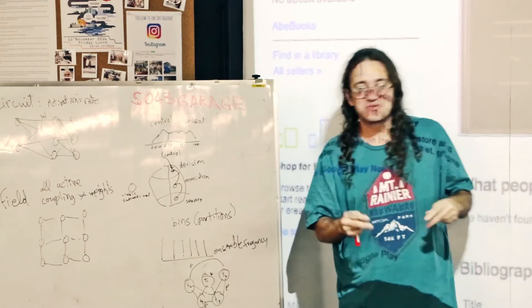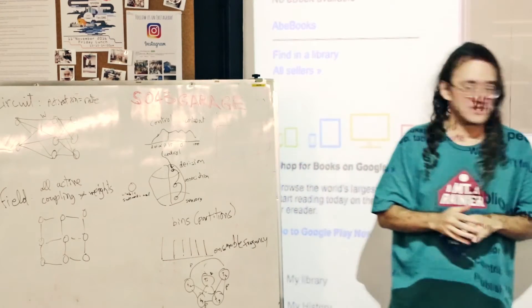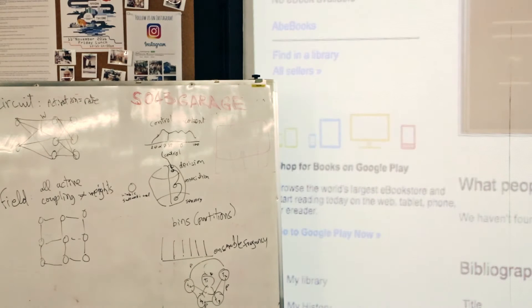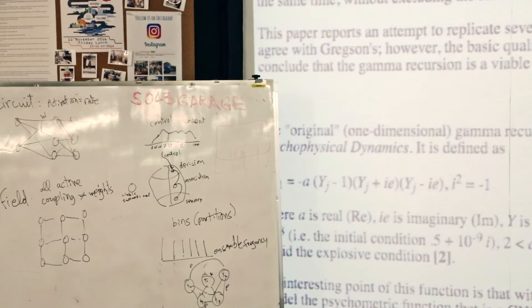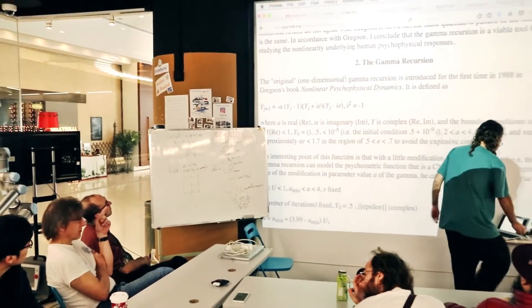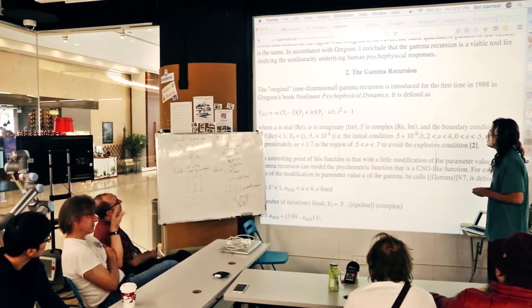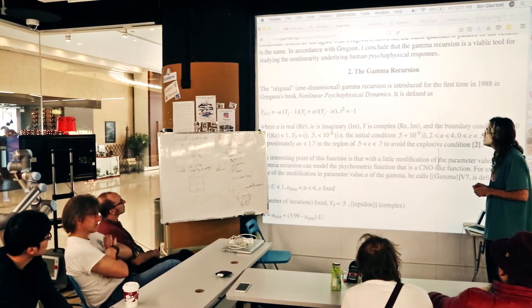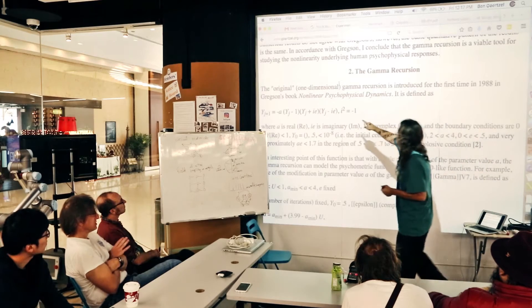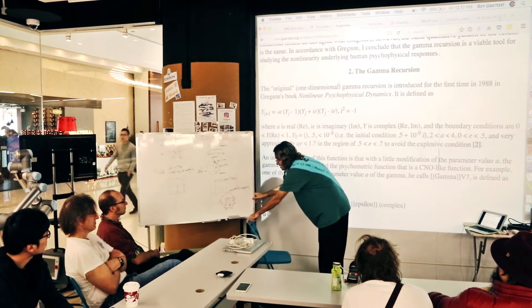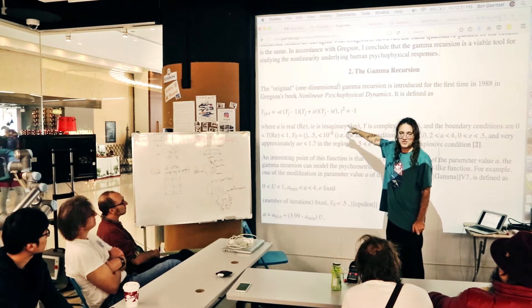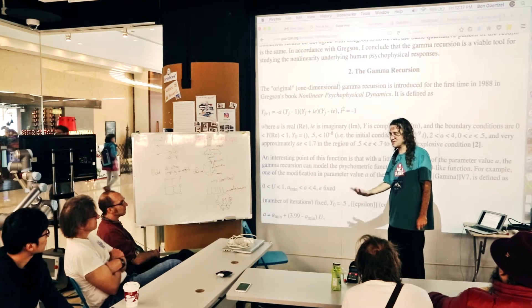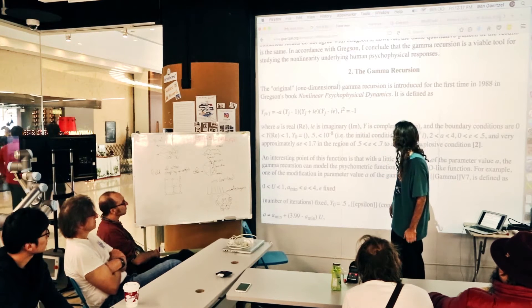The one that I fiddled with that I still find exciting, maybe because I never got to the end, is you have the diffusion but in each square you put some finite state machine. They're all running the same finite state code. We were substituting a finite state machine for a differential equation, using this difference equation that was come up by a guy named Robert Gregson who was in Melbourne. He was a mathematical psychologist.